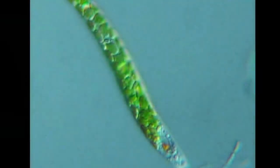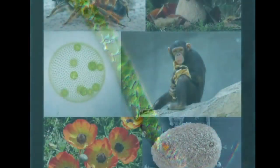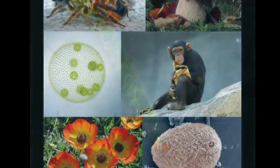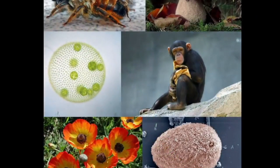Around this time, Chien-Shiung Wu was recruited by the Manhattan Project to help develop a process for separating uranium metal into U-235 and U-238 isotopes by gaseous diffusion. She was an expert experimentalist in beta decay and weak interaction physics. Wu designed an experiment that enabled theoretical physicists Tsung-Dao Li.